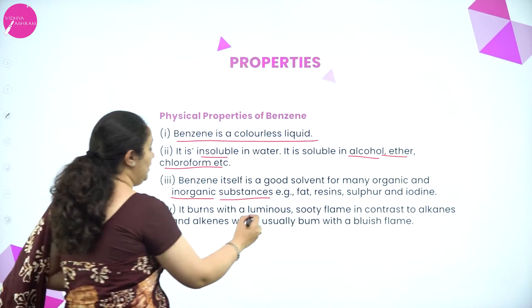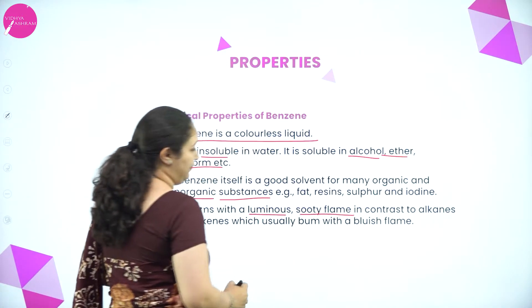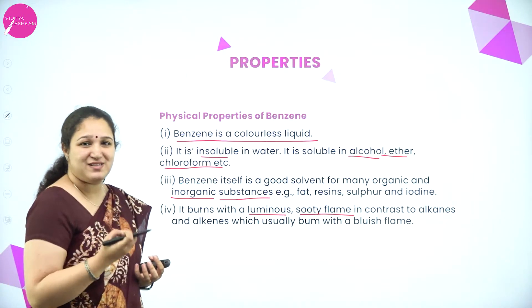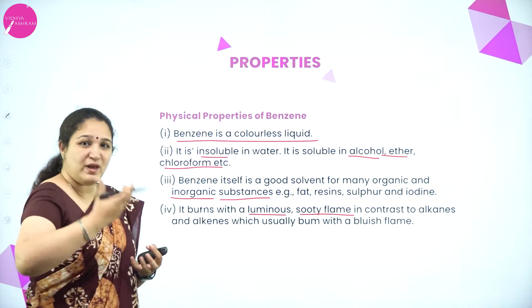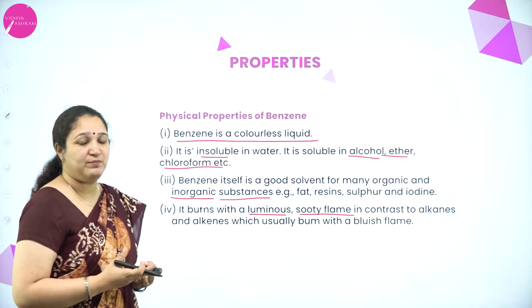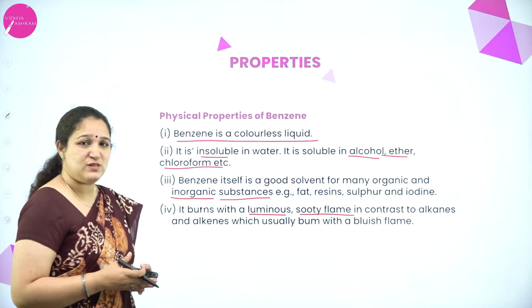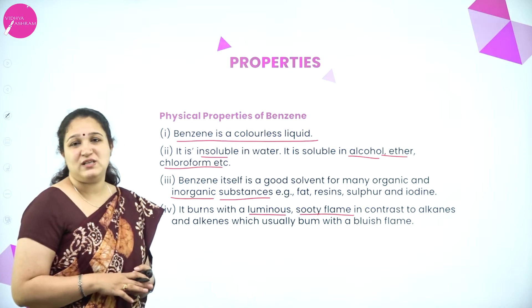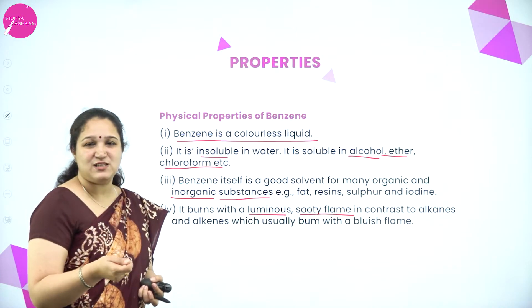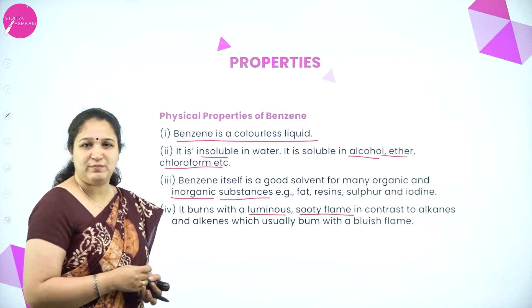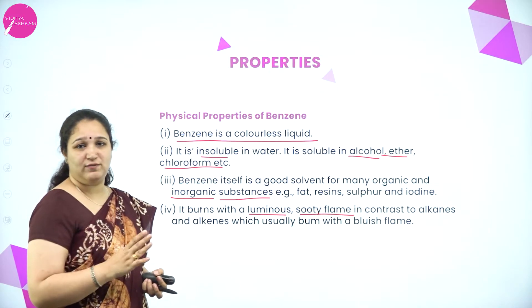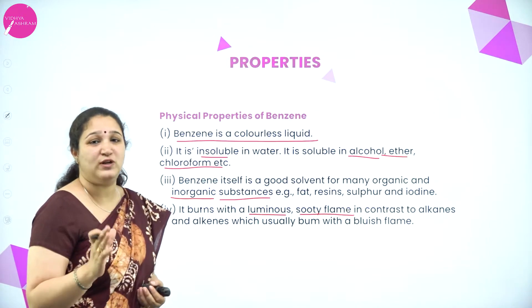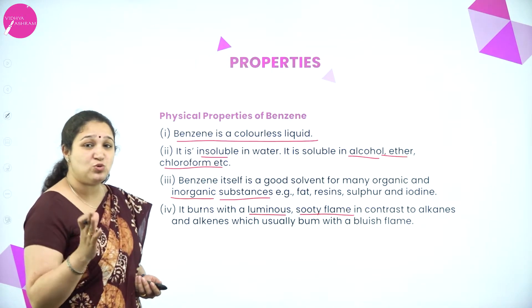Benzene burns with a luminous sooty flame — sooty flame means a lot of smoke, red-colored smoke coming out. In contrast, aliphatic hydrocarbons do not have a sooty flame; they have a blue flame. For example, LPG gas which you light at home has a blue colored flame — that is a non-sooty flame. If a lot of soot or smoke comes out, we call it a sooty flame. So benzene burns with a sooty flame.